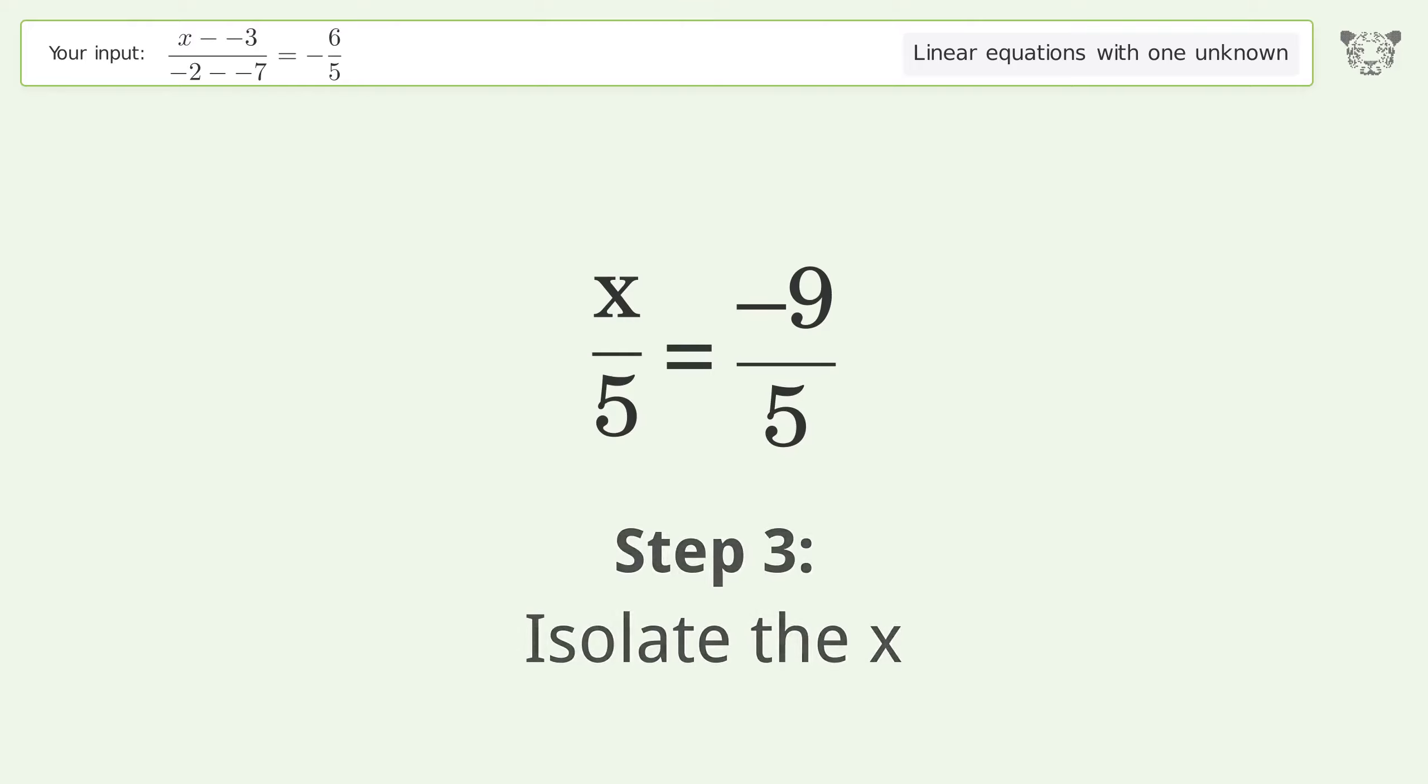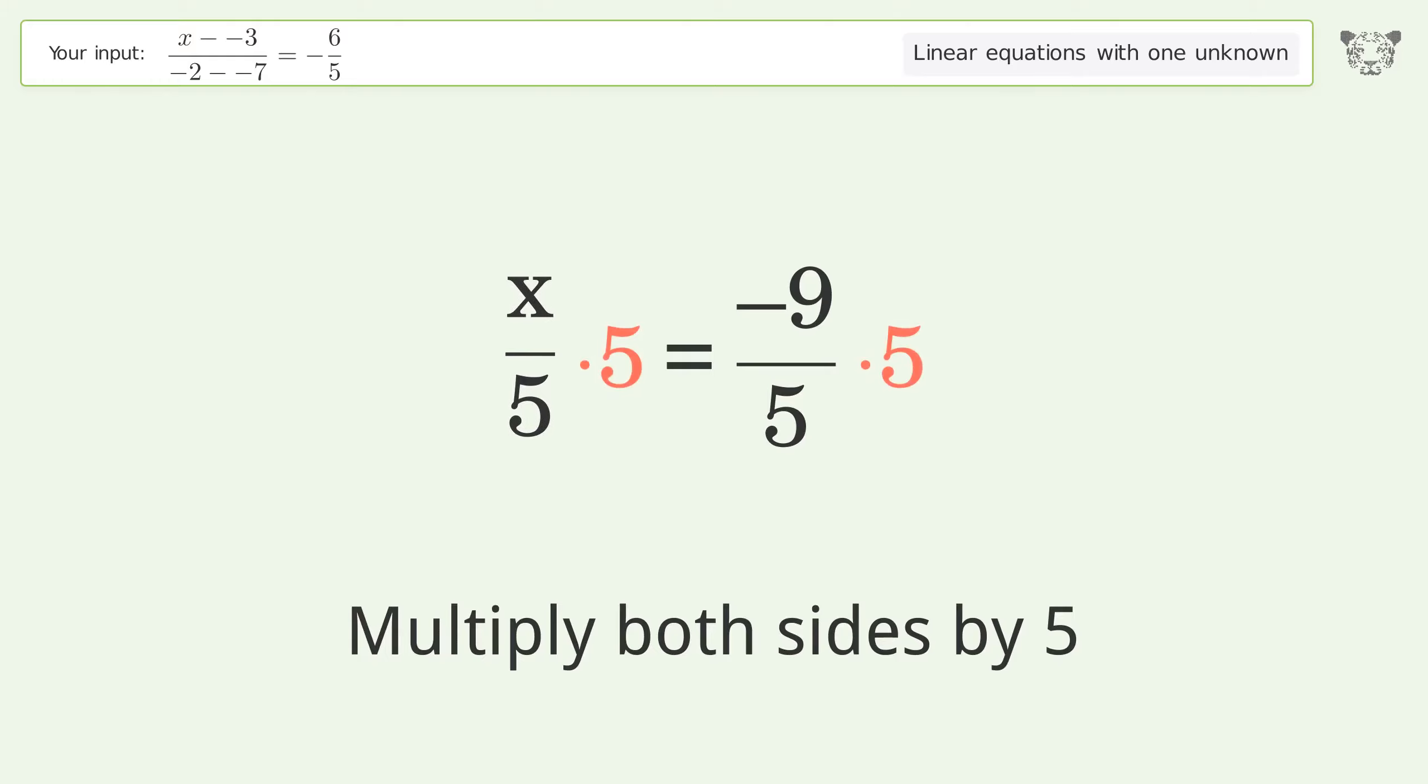Isolate the x. Multiply both sides by 5. Group like terms.